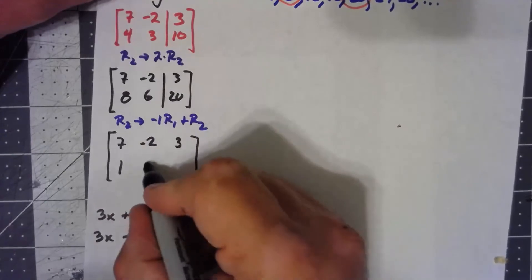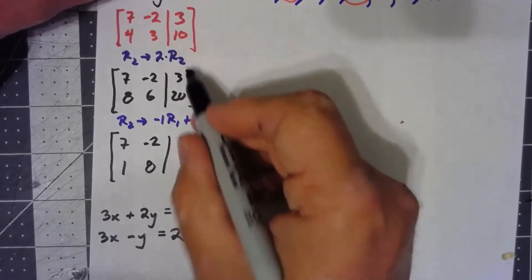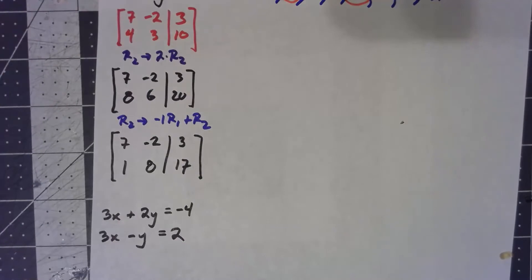Let's see, 2, that would give me an 8, and a 17. Well, but if I got a 1 down in the lower left, now I just have to swap the two rows.